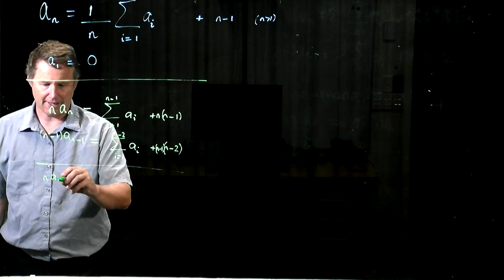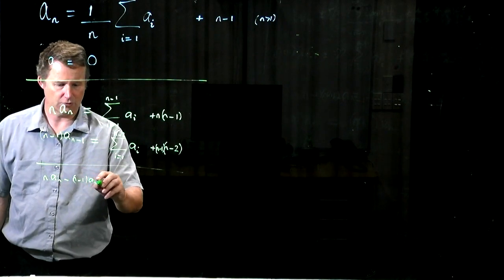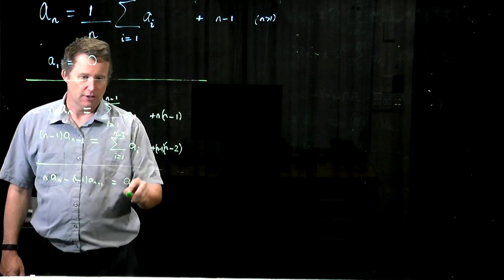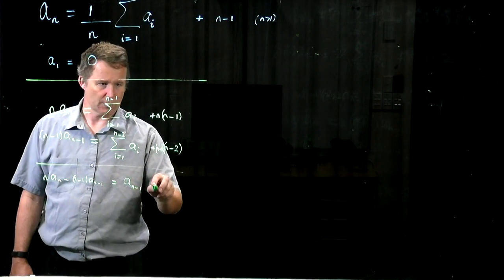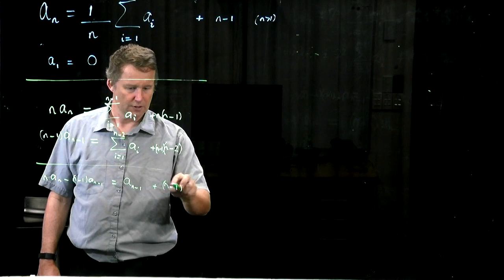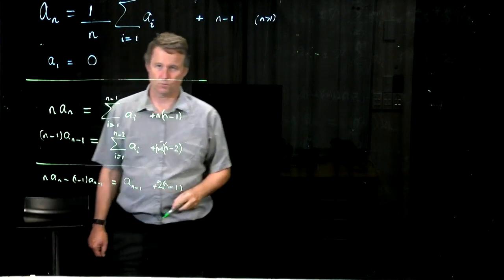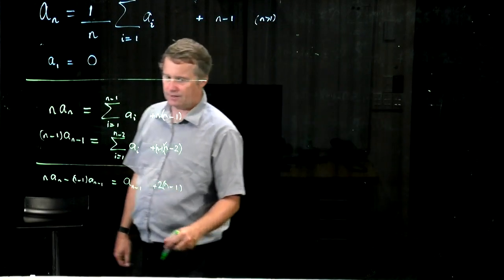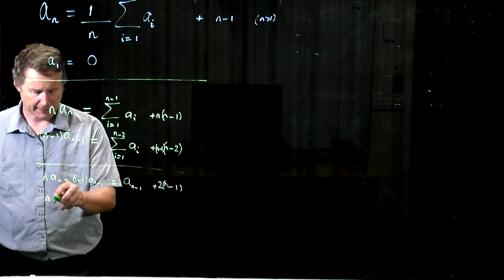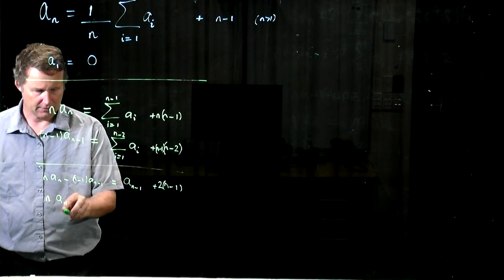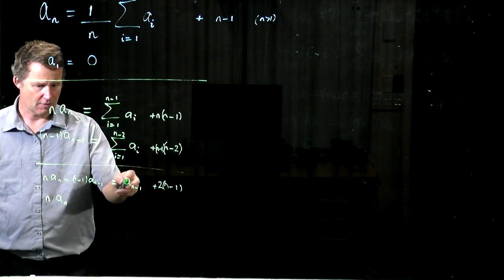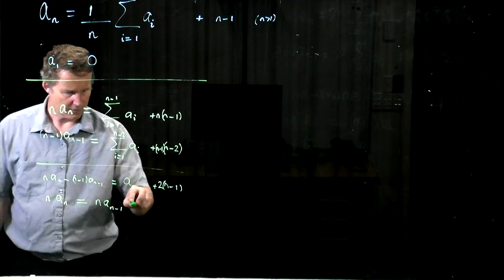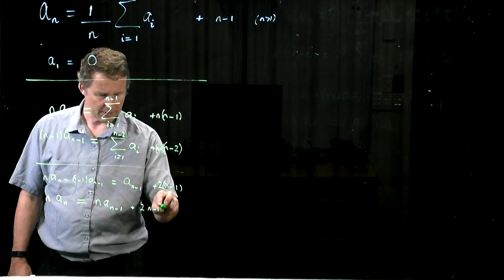So we get n a_n minus n minus 1, as we did before. And now we just get a_{n-1}, and then we get this n minus 1 times 2 when we subtract here. Reorganizing that, we get n a_n equals n a_{n-1} plus 2 n minus 1.